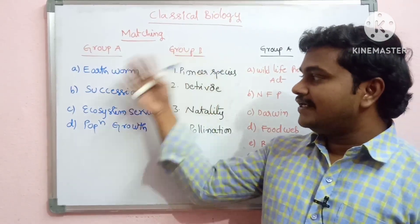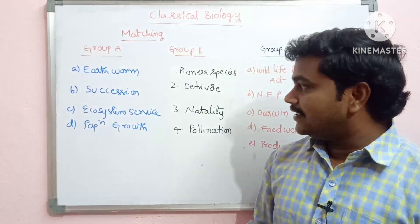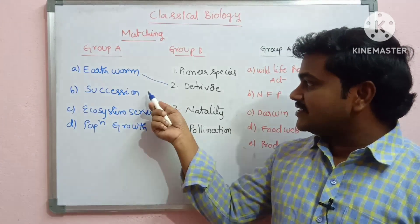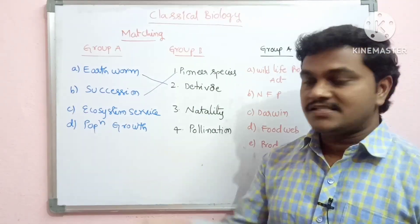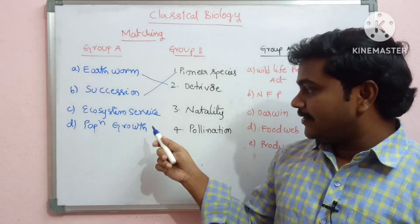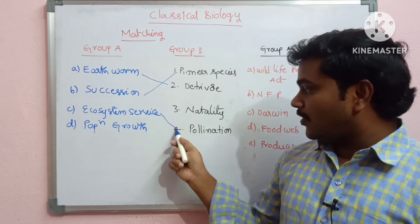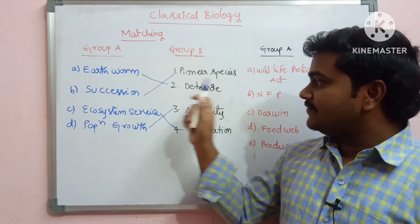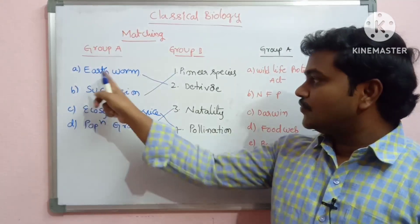Succession is matched with Final Species — that is the early strategic species. Eco-System Services is matched with Pollination. Population Growth is matched with Natality. So we will match these accordingly.